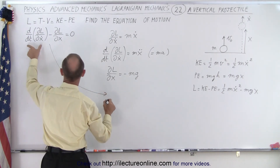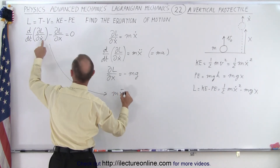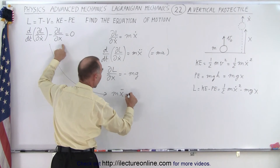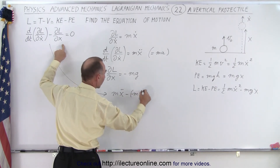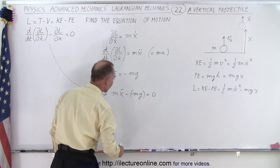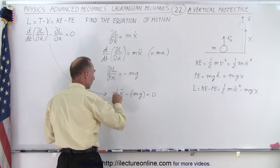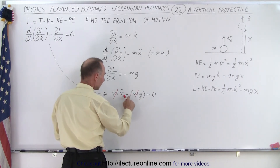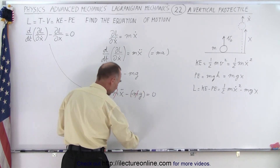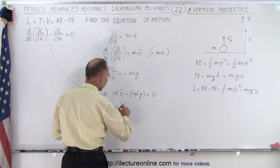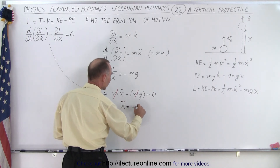And then we can use the Euler-Lagrange equation. We can say that the first part, which is mx-double-dot, minus the partial derivative with respect to x — which is minus mg — equals zero. Notice that both terms have an m in it, so that cancels out. For x-double-dot, the minus times the minus gives a plus, and when it moves to the other side, I end up with x-double-dot equals minus g.